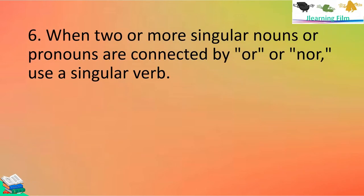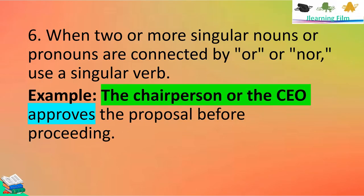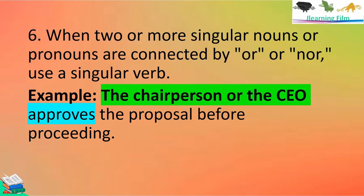Rule number six: when two or more singular nouns or pronouns are connected by OR or NOR, always use a singular verb. For example, 'The chairperson or the CEO approves the proposal before proceeding.' Even if there are two nouns stated, because of the use of OR, we still use a singular form of verb — approves.